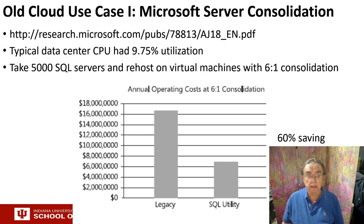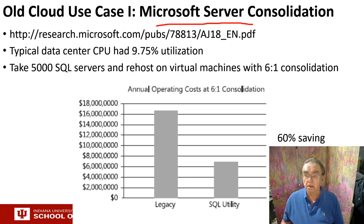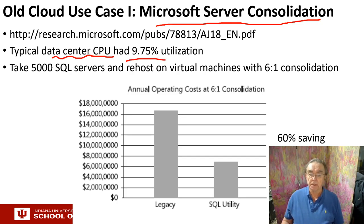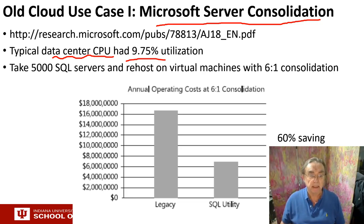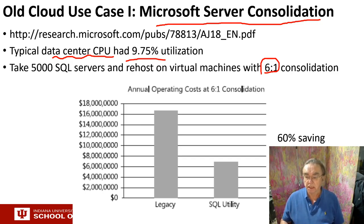Here's an old cloud use case from an early Microsoft publication. They were looking at a data center which had 5,000 SQL servers running with CPUs only 9.75% utilized — that's because the old way of packaging was very inefficient. By repackaging everything as virtual machines and deploying images that automatically relocated to idle cores, they did the same computing with six times fewer servers, because you could run multiple jobs on the same server. In this case, that saved about $10 million a year.